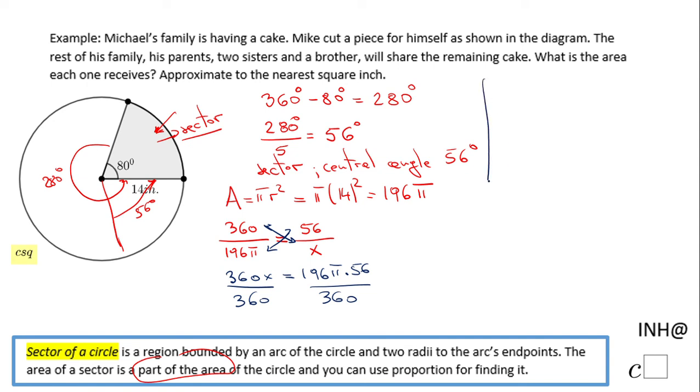We end up with x equals (196 × 56 × π) / 360. We can rearrange this product because multiplication is commutative.